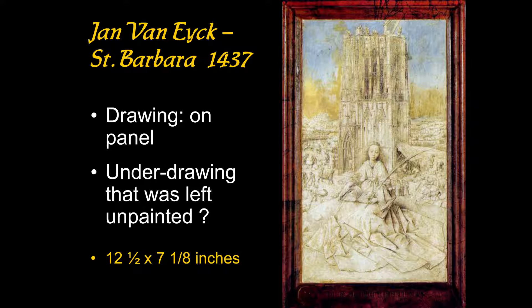Someone has added some paint to it, but it's not painted for the most part — it is a very detailed drawing on panel, on oak. One idea is that this may be an underdrawing that was left unpainted. Was it originally intended to be seen as a drawing? That's possible, but the other possibility is that it was an underdrawing that was never finished.